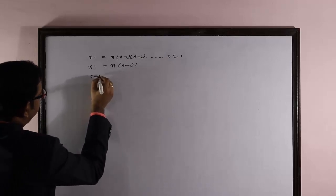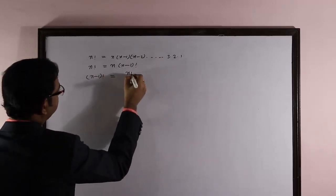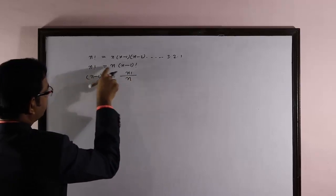In this way, (n-1) factorial is equal to n factorial divided by n.